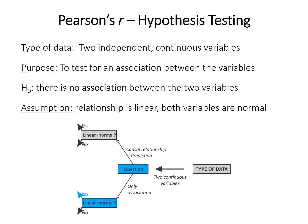To perform statistical hypothesis testing, we frame this as a null hypothesis. Testing whether r is significant requires two independent continuous variables. The purpose is to test for an association without assuming any causal relationship. Our null hypothesis is that there is no association between the two variables. Pearson's correlation is a parametric method, so it requires that both variables are normally distributed and that the relationship between the two is linear.